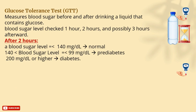The third test is the glucose tolerance test. It measures blood sugar before and after drinking a liquid that contains glucose. The person fasts overnight, takes the first sample, then drinks the glucose liquid and checks blood sugar every 1, 2, and sometimes 3 hours afterwards. A level after 2 hours of less than or equal to 140 mg/dL is considered normal. Between 140 and 199 mg/dL is pre-diabetic. At 200 mg/dL or higher, the person is considered diabetic.